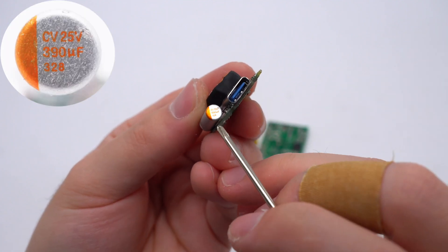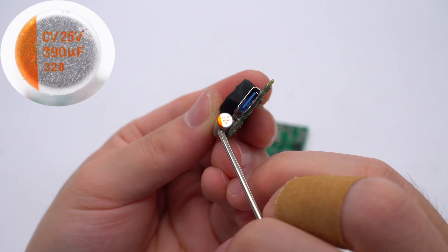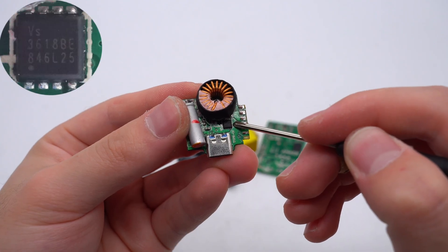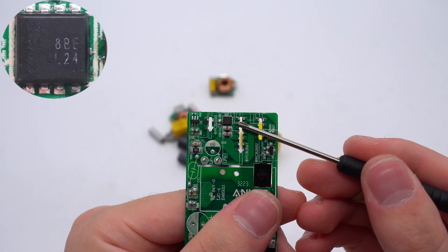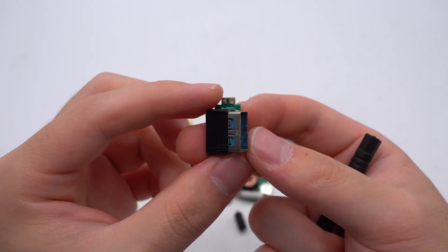The specs of this solid capacitor for output filtering is 25V, 390μF. The VBUS MOSFETs for USB-C2 and USB-A are the same as that of the USB-C1. The USB-A socket is insulated by black tape.